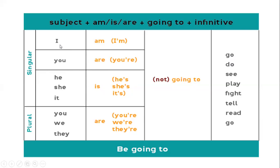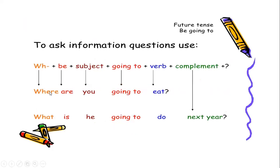And what about the negative? I am not going to go. You are not going to see. He is not going to play. She is not going to fight. It is not going to tell. You are not going to read. We are not going to go — and notice here we have 'going to' and 'go': going to is the auxiliary and go is the main verb. They are not going to go. The main verb goes in the infinitive — base form: ir, leer, decir, pelear, jugar, ver, hacer.